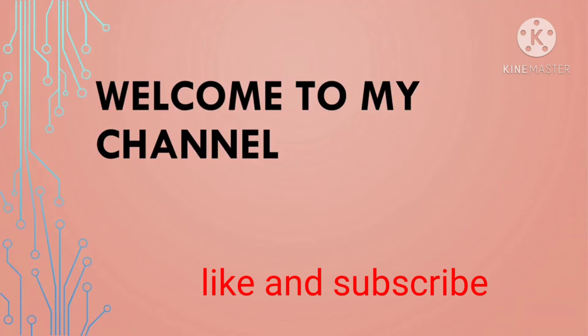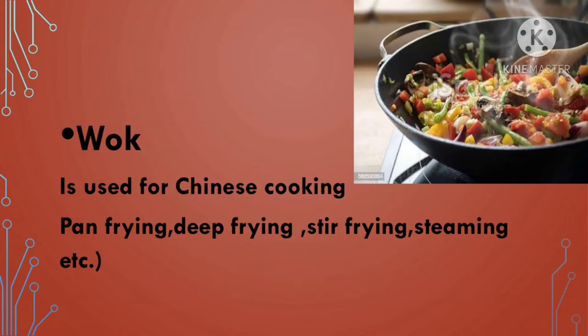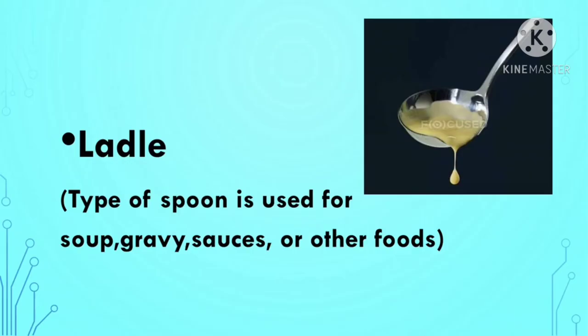Welcome to my channel. Today we are going to study vocabulary of kitchen items. The first one is wok — wok means kadhai, it is used for frying and deep frying. Ladle is a type of spoon and it is used for soup and gravy.